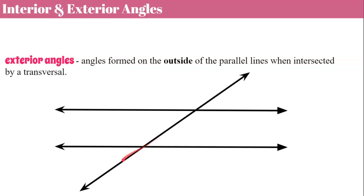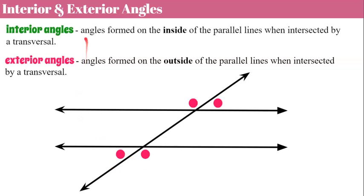Now let's talk about interior and exterior angles. Again, I have my parallel lines cut by my transversal. Exterior angles are the angles formed outside of the parallel lines when intersected by the transversal — they don't have a special numerical relationship, but you need to understand the vocabulary word 'exterior.' These are the four exterior angles on the outside of the parallel lines. Interior angles are formed on the inside of the parallel lines. The green angles are interior; the pink angles are exterior.